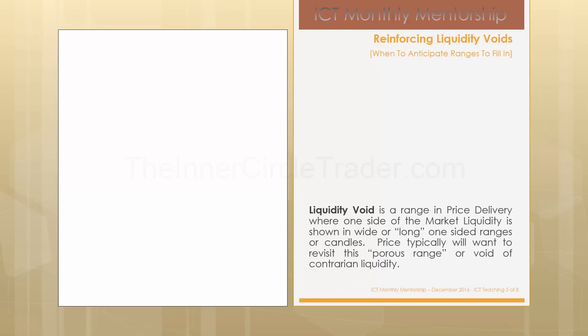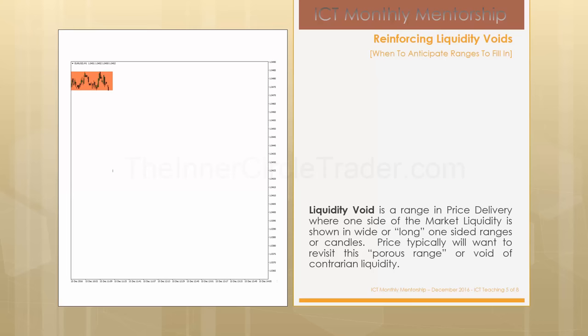A liquidity void is a range in price delivery where one side of the market liquidity is shown in wide or long one-sided ranges or candles. Price typically will want to revisit this porous range or void of contrarian liquidity. We're going to look at an example of a liquidity void. When price is in a small consolidation or a trading range, we call this price imbalance.